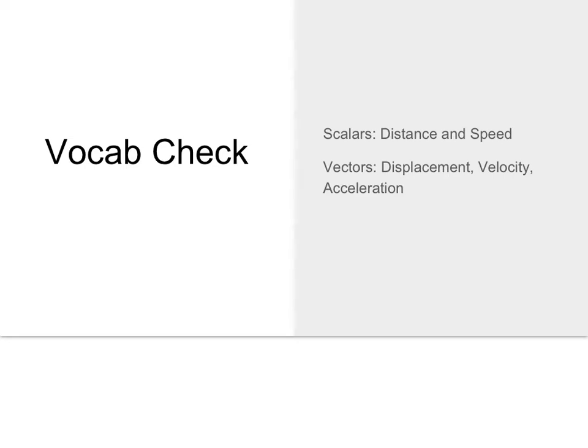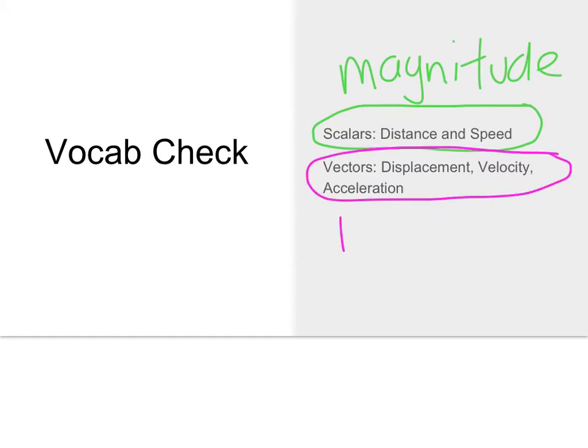As a reminder, scalars are distance and speed. They are just magnitude. However, our vectors are displacement, velocity, and acceleration. They have magnitude plus a direction. This is going to become really important when we are working through our different problems and in graphing.